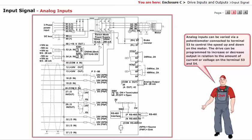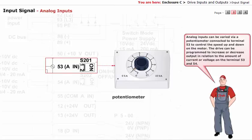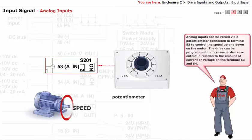Analog inputs can be varied via potentiometer connected to terminal 53 to control the speed up and down on the motor.